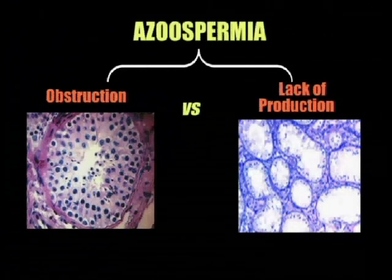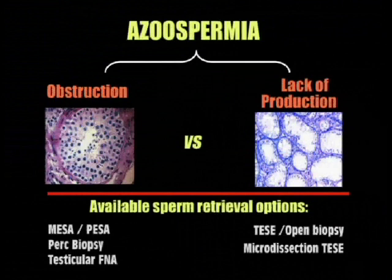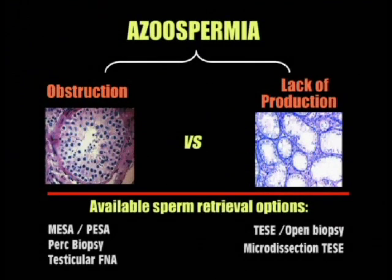Azoospermia is a lack of sperm in the ejaculate. There are two types of azoospermia: obstructive and non-obstructive. In non-obstructive azoospermia, sperm production is severely impaired. The sperm retrieval options available for non-obstructive azoospermia include fine needle aspiration, open testicular biopsies, and microdissection testicular sperm extraction.